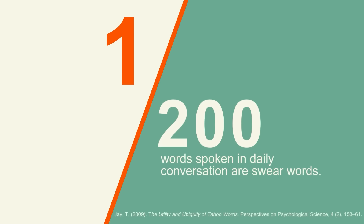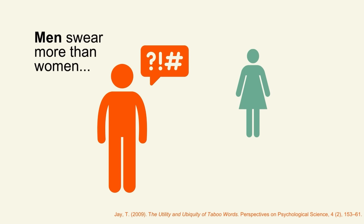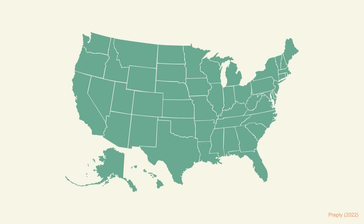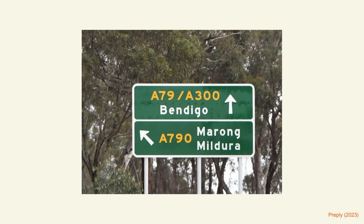Researchers estimate that swear words make up about 0.5% of our daily words — one swear word for every 200 words we say. Teenagers swear the most — no shit. Men swear more than women and use more offensive words. The most popular swear word is 'fuck.' The most prolific swearers in the UK come from Wales. The sweariest state in the US is Columbus, Ohio. And if you want to continue enjoying the soothing sounds of an Australian accent shouting obscenities, head to Bendigo in Victoria.